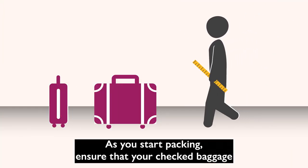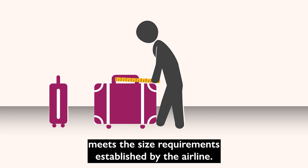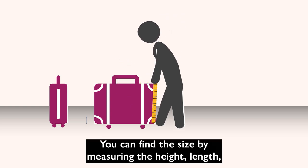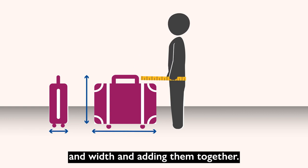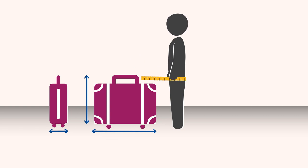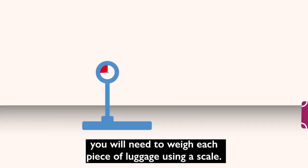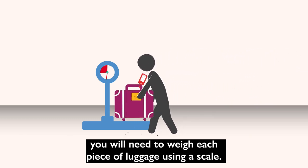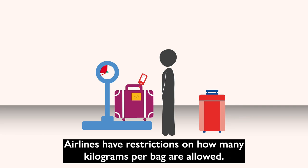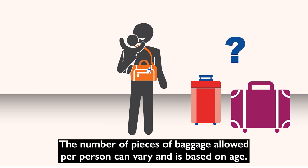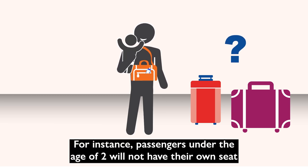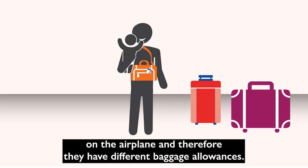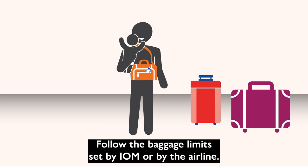As you start packing, ensure that your checked baggage meets the size requirements established by the airline. You can find the size by measuring the height, length, and width, and adding them together. After your bags are packed, you will need to weigh each piece of luggage using a scale. Airlines have restrictions on how many kilograms per bag are allowed. The number of pieces of baggage allowed per person can vary and is based on age. For instance, passengers under the age of two will not have their own seat on the airplane and therefore have different baggage allowances. Follow the baggage limits set by IOM or by the airline.